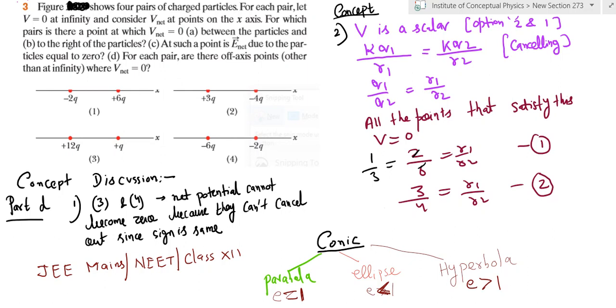The first pair, the ratio of the distance has to be 1 by 3, and the second pair, the ratio of distance is 3 by 4. So I will talk about this concept and elaborate upon this concept in my next video.